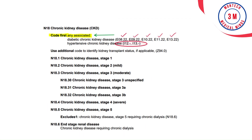Another example of 'Code First' is chronic kidney disease. If chronic kidney disease develops due to or in association with hypertension or diabetes, then code first the associated condition such as hypertensive or diabetic chronic kidney disease. 'Code First Underlying Condition' is a mandatory instruction, while 'Code First Any Associated' and 'Code First If Applicable' are optional instructions.